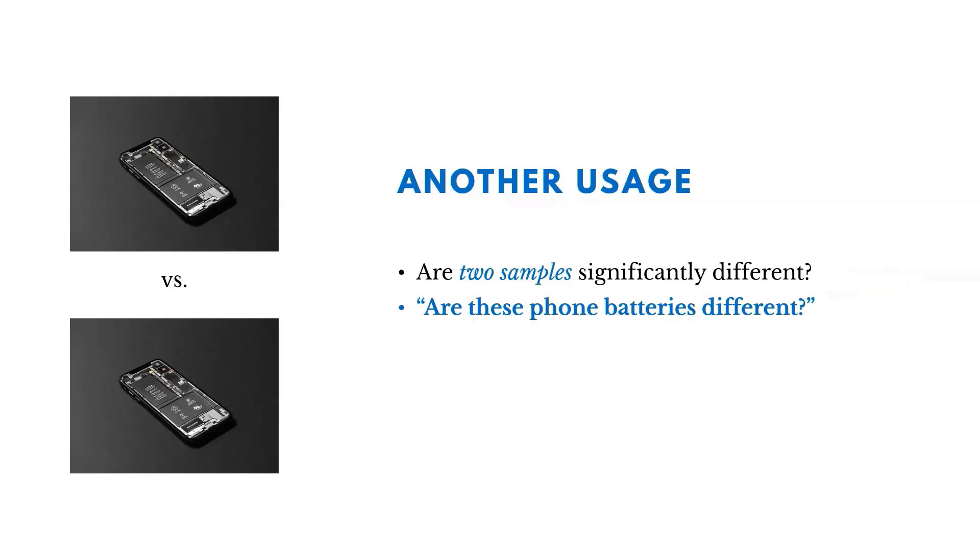Here's another way of looking at this. Instead of looking or comparing a sample to a population, we could compare two samples to each other. Are two samples of batteries significantly different? Are the phone batteries as one more reliable than the other? Do we assume they're the same or do we assume that they're different? So we can compare a sample to a population or two samples to each other.